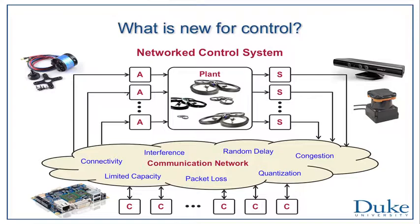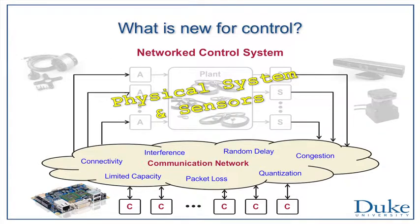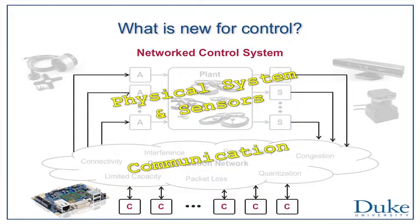Once you put a communication network in here, you need to deal with connectivity, interference, delays, and all these kinds of things in closing your loop. These systems essentially comprise of the physical part, the communication part, and then the control part of the system.